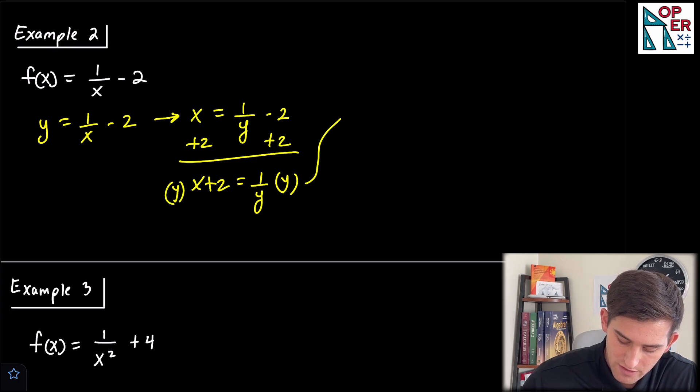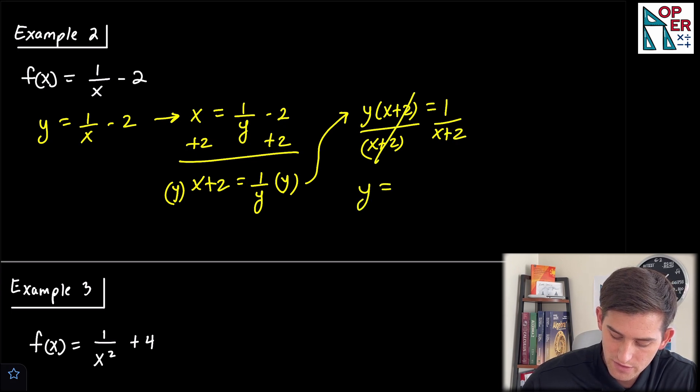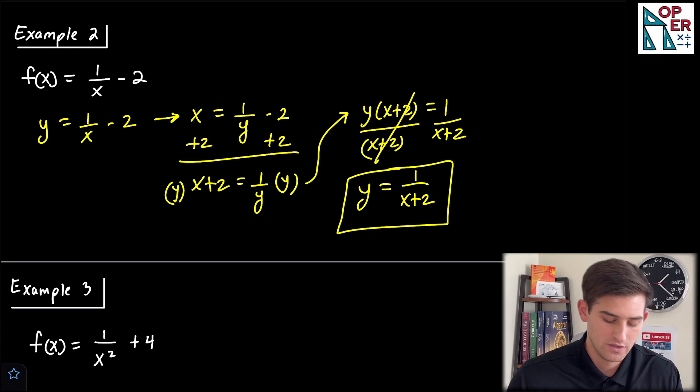Now let's multiply both sides by y. So let's bring it up here. Now we have y times x plus 2 is equal to 1, and lastly, let's divide both sides by x plus 2. So it's going to cancel that right there, and we have y is equal to 1 over x plus 2 as our inverse for 1 over x minus 2.